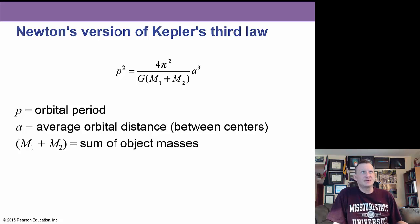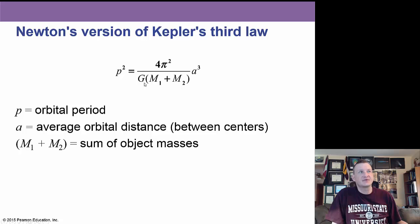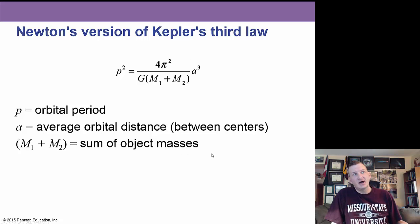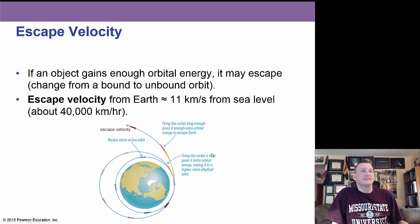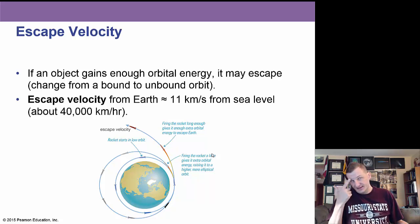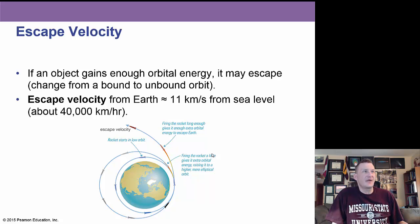Escape velocity is the speed an object must have to escape Earth's gravity. From Earth at sea level, this is 11 kilometers per second — about 40,000 kilometers per hour, or about 25,000 miles per hour.